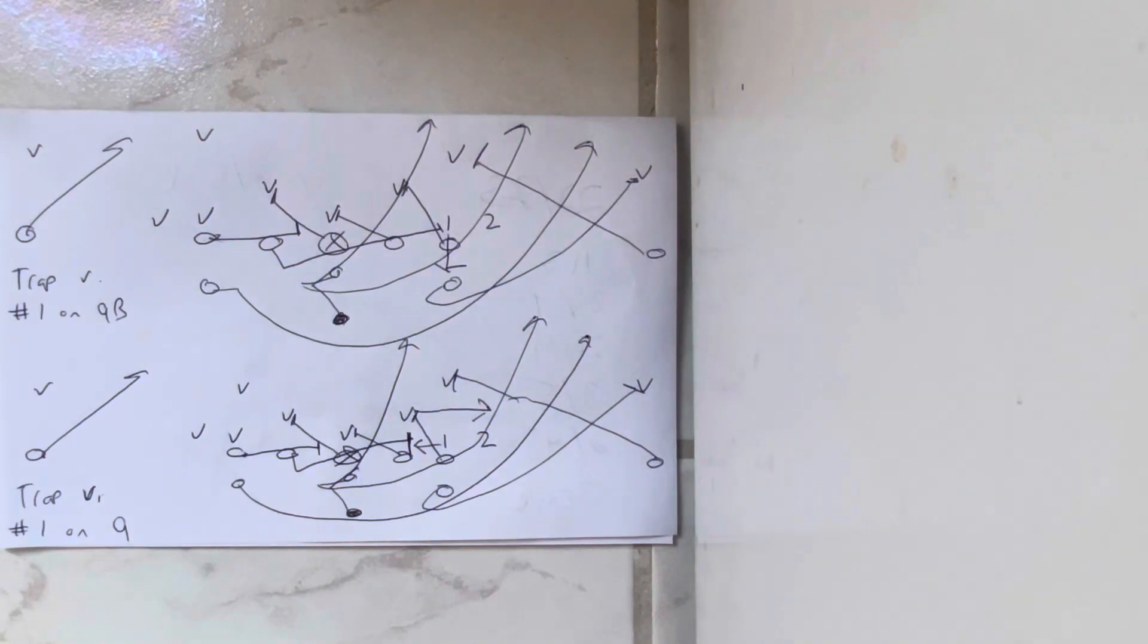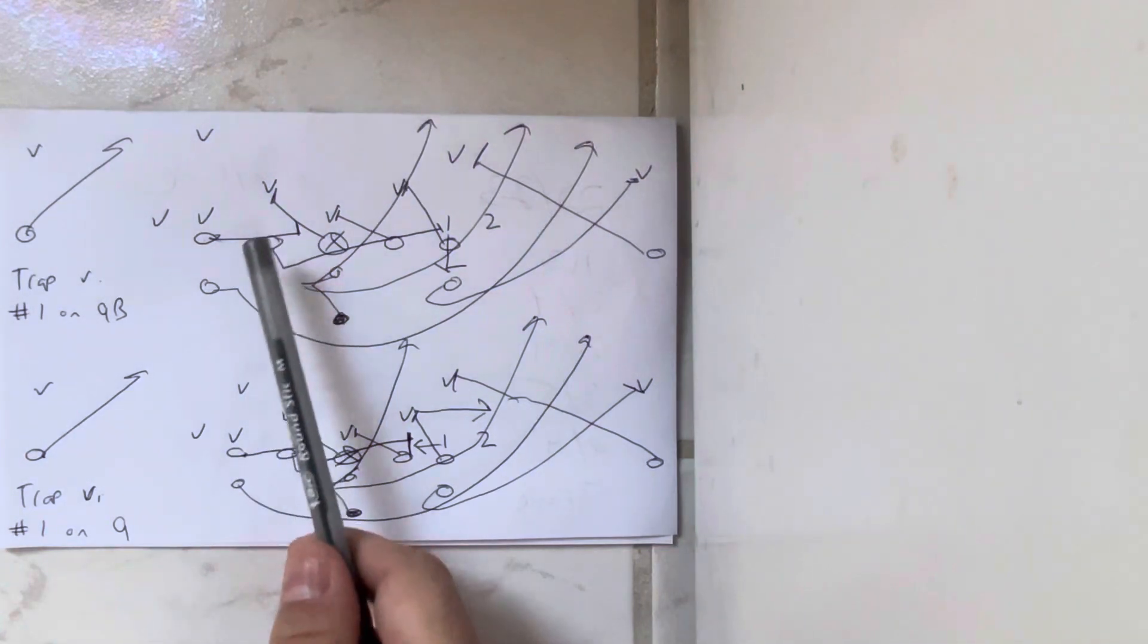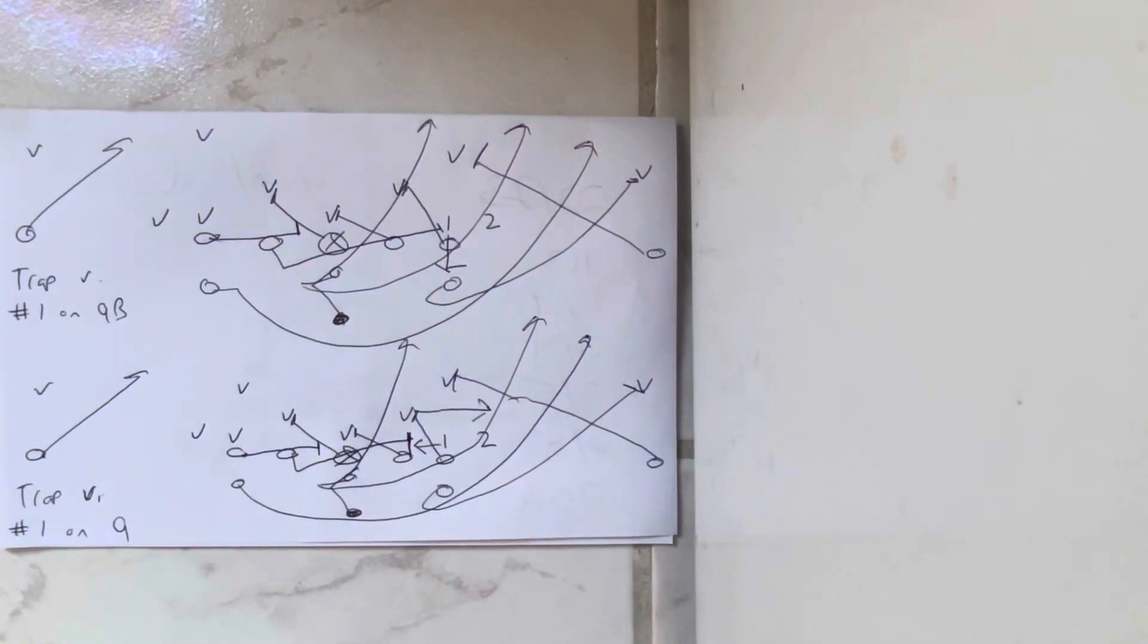So this is how trap becomes a holistic play. Paul Johnson invented it so that you would trap number one when he took the quarterback because you trapped to the void.